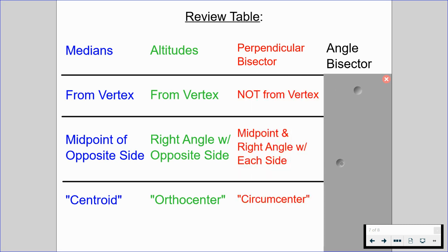Perpendicular bisectors do not start from a vertex. They start at the midpoint of each side and form a right angle with it, and their point of intersection is called the circumcenter.